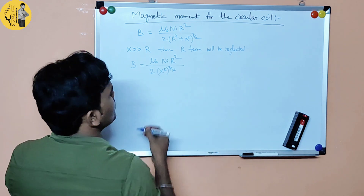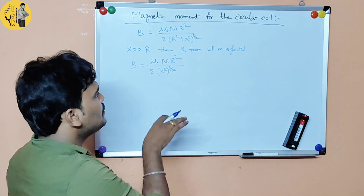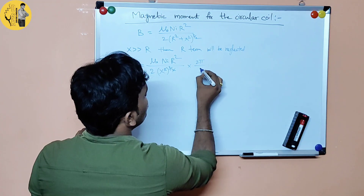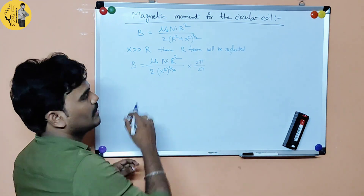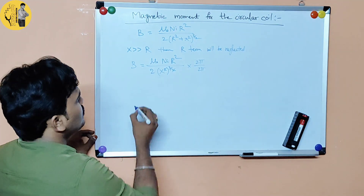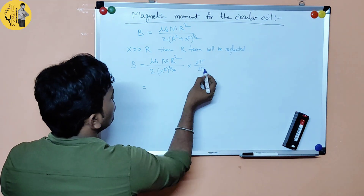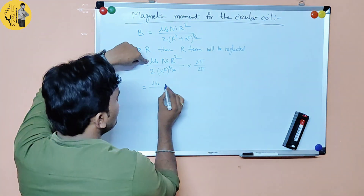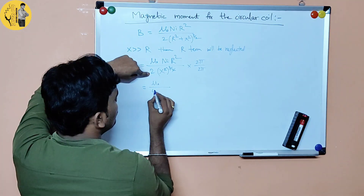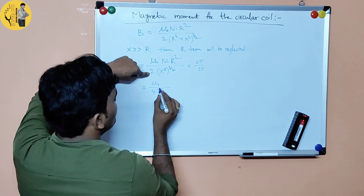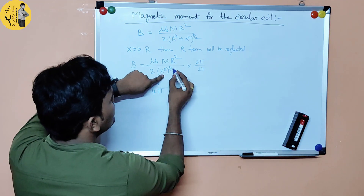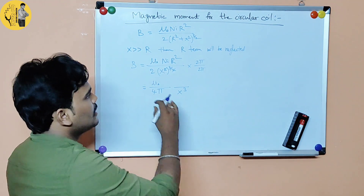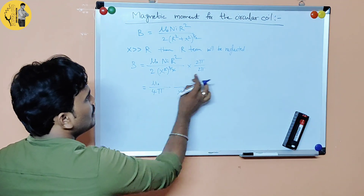Simplifying: x squared to the power 3 by 2 gives x cubed, and 2 in the numerator and denominator cancel. We then multiply by 2 pi over 2 pi. So we get mu naught in the numerator. The denominator becomes 2 times 2 equals 4, giving mu naught by 4 pi. In the numerator we have x cubed in the denominator.